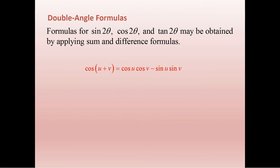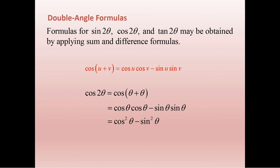What about cosine? Same deal — you've got cosine u plus v, but if we say 2 theta, that's just theta plus theta. So we wind up with cosine cosine minus sine sine, or cosine squared theta minus sine squared theta.